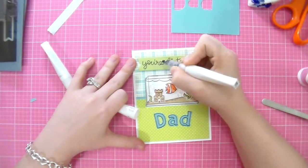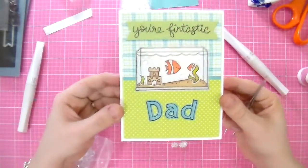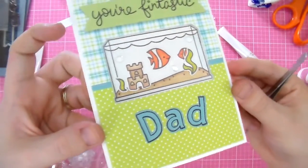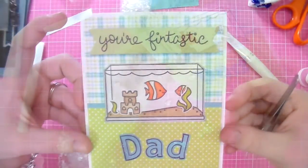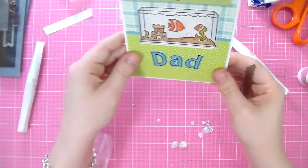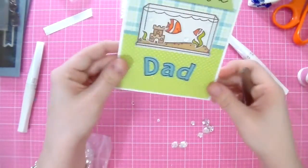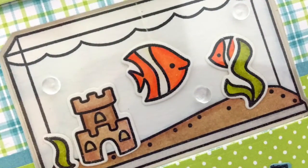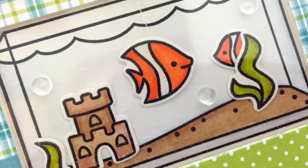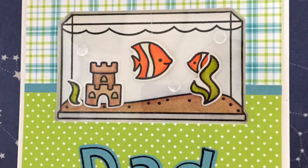And then I finished off the card using Wink of Stella on the sentiment and the letters. And that pretty much finishes up my card. As always if you have any questions feel free to leave them below. You can also check out the corresponding blog post that I'll link below. Remember if you like this video give it a thumbs up and subscribe if you'd like to see more. Thanks for watching. Bye.